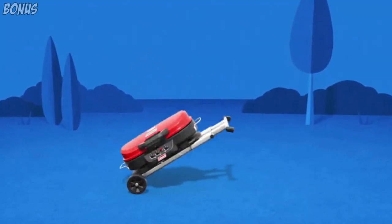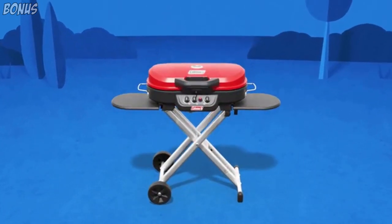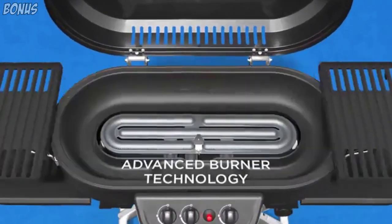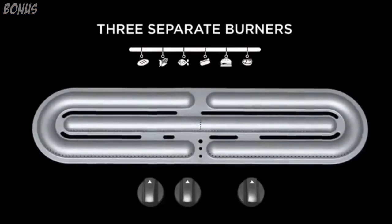Introducing the Coleman Road Trip Portable Grill. This versatile grill folds to the size of a suitcase and features quick-fold legs, tough wheels, and stand-up storage capability.